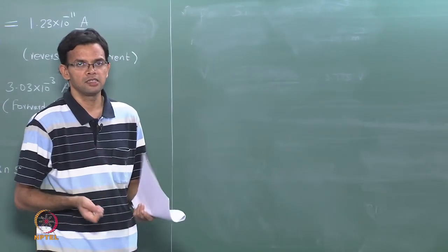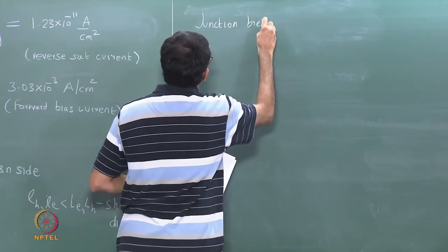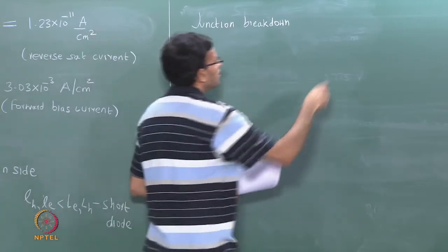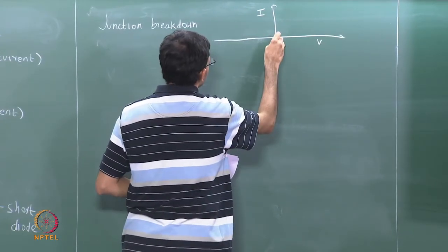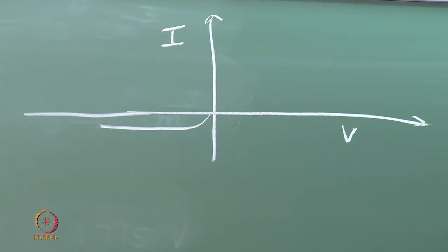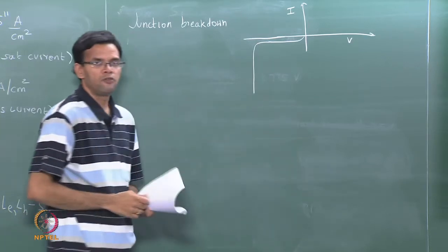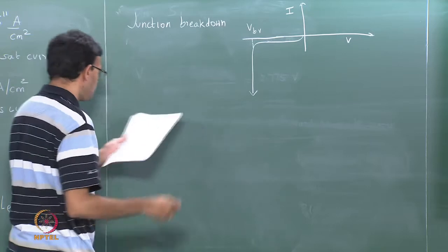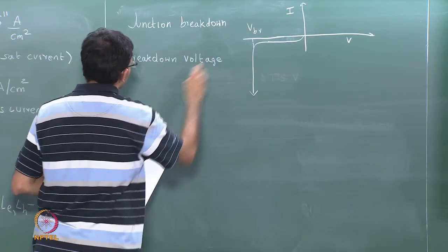Let us look at the I-V characteristics on the reverse bias side. In reverse bias the current is constant and equal to the reverse saturation current, but at really large voltage values the diode breaks down, and you have a large reverse current flowing through the material. The voltage at which this happens is called the breakdown voltage. This happens in reverse bias.